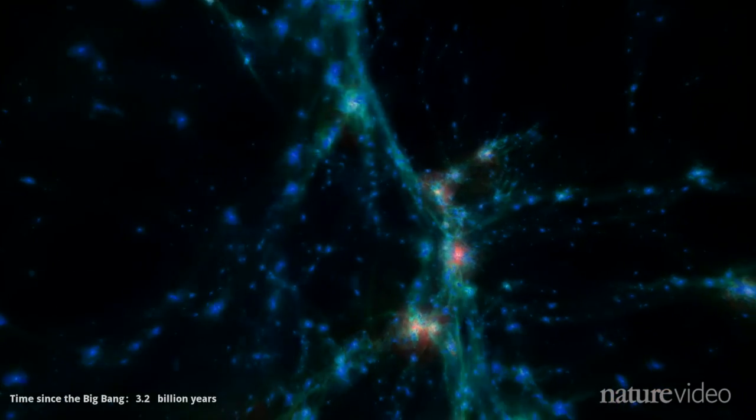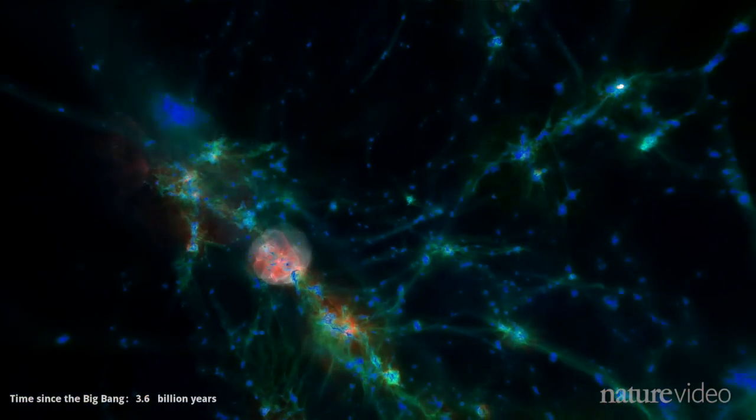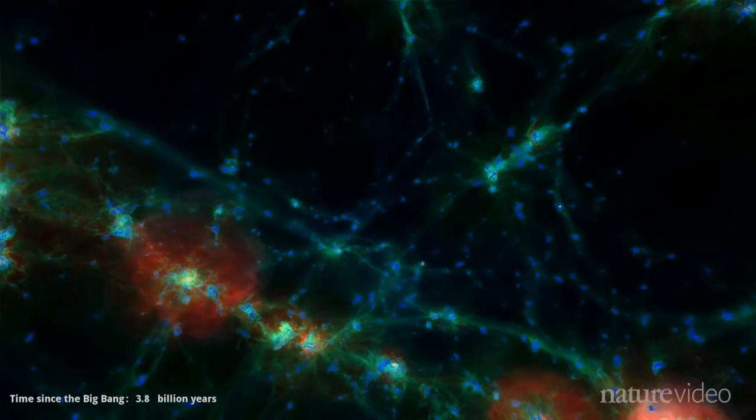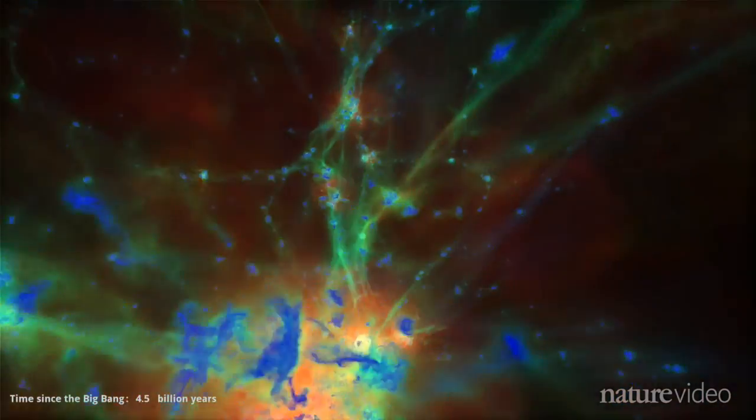Now we're looking at the ordinary matter. Blue shows relatively cold clouds of gas where stars form. Green is warmer gas, while red and white show hot regions around the most violent galaxies.